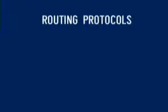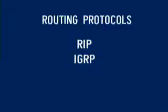Interior protocols are used for routing within an autonomous system. Interior protocols are also used to exchange routing information between autonomous systems. Interior Gateway Routing Protocols include RIP (Routing Information Protocol) and IGRP (Interior Gateway Routing Protocol).